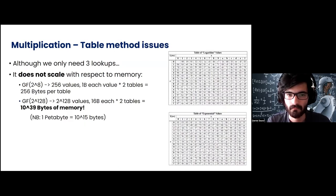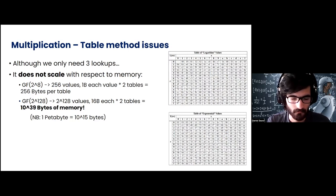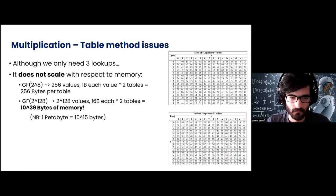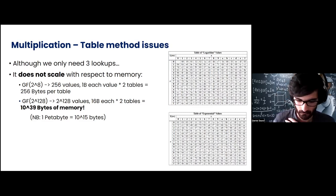We only need three lookups, which is great, but it does not scale with respect to field size. If we want to do operations in the Galois field of GF(2^8), we only need 256 bytes per table. But if we want to do these operations in GF(2^128), we need 10^39 bytes of memory. This does not scale — it goes crazy.